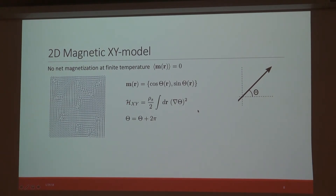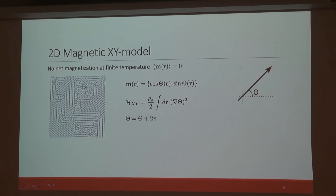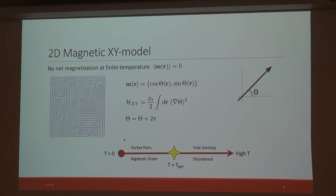So back to our focus: we know the properties of the 3D TI we want to study. We need to find a magnet fitting the description of this effective gauge field. It needs to be an easy-plane magnet, meaning all moments are in-plane, minimizing the out-of-plane magnetic moment, so we can simulate a random vector potential. The 2D magnetic XY model is the perfect model for our magnet. It has no net magnetization at finite temperature, and the magnetic order parameter is just a spin in the plane. The Hamiltonian is simple, but the order parameter has degeneracy—if you translate by 2 pi, the spin points in the same direction—and because of that, this model has vortices.